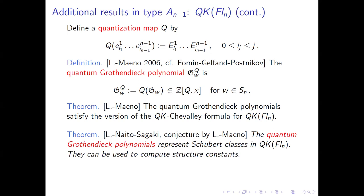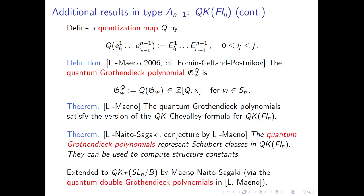These quantum Grothendieck polynomials can be used exactly like quantum Schubert polynomials — to compute structure constants for any product, since the Chevalley formula gives a very special product. This result was extended to T-equivariant quantum K-theory of the type A flag variety by Maeno, Naito, and Sagaki, where they showed that quantum double Grothendieck polynomials also represent Schubert classes in T-equivariant quantum K-theory.